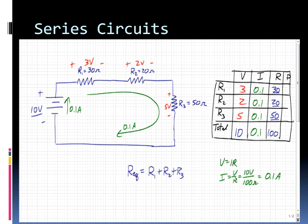To figure out power, that one's pretty easy. Power is just equal to current times voltage. So 0.1 amp times 3 volts is 0.3 watts, 0.2 watts, 0.5 watts or my total which I could get by adding up my powers for R1, R2 and R3 or by taking IV for the total is going to be 1 watt.